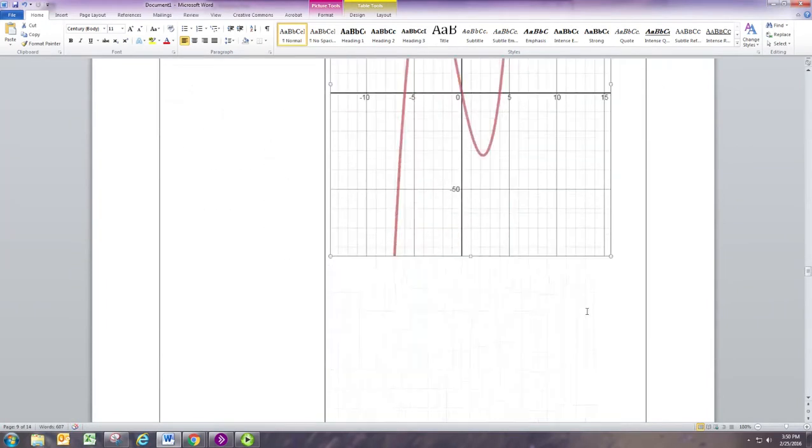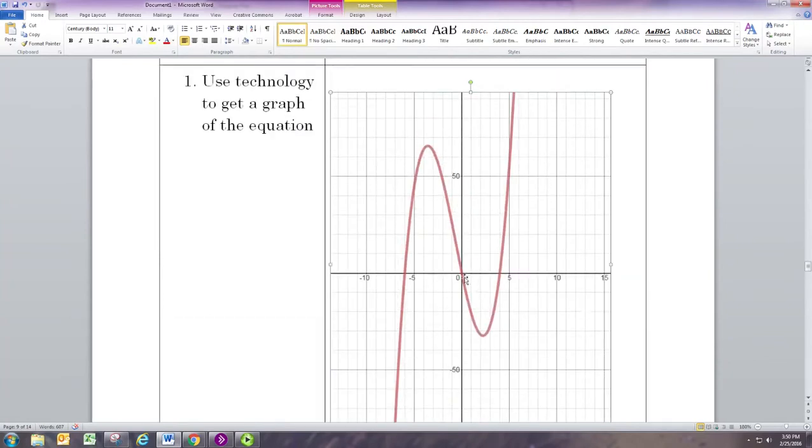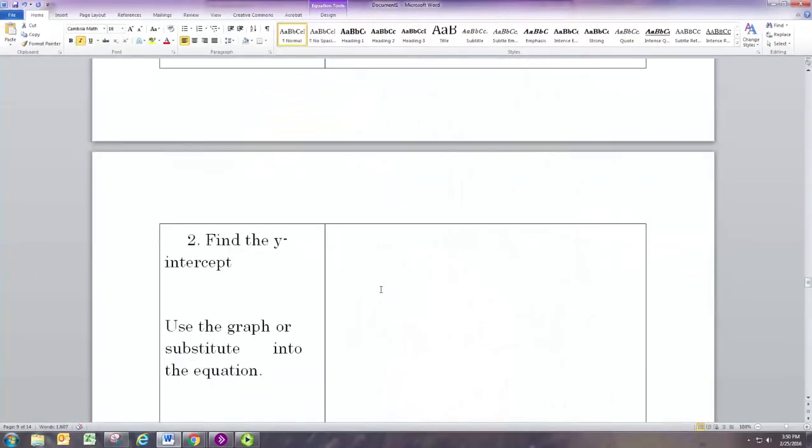Once you have a nice graph, you can do things like find the y-intercept. From the graph it's pretty obvious where the y-intercept is - it's right at the origin. You can also find that from the equation and validate it. Remember the y-intercept is where it crosses the y-axis, and that's when x is zero because you haven't moved left to right at all. If we put x equal to zero in this equation, zero times anything is zero, so this equals zero. The y-intercept is the origin.